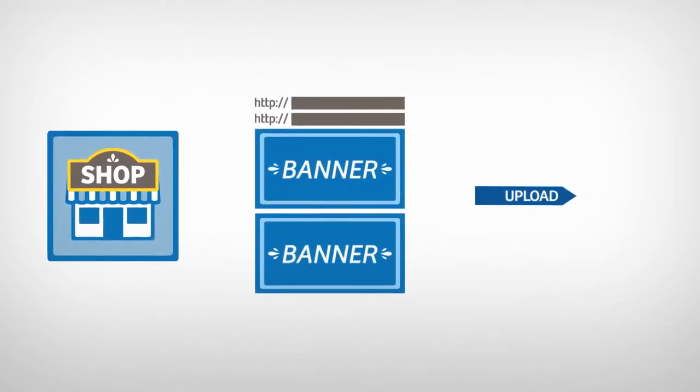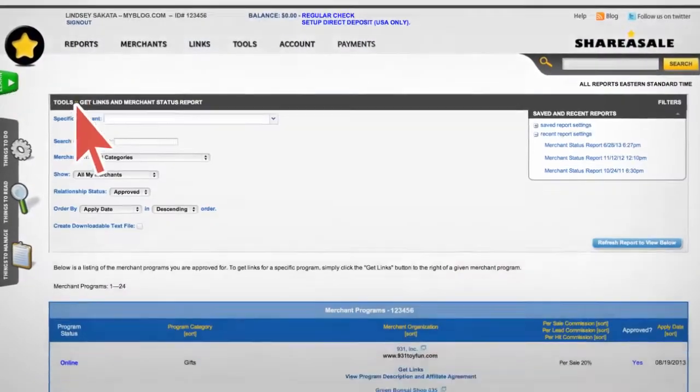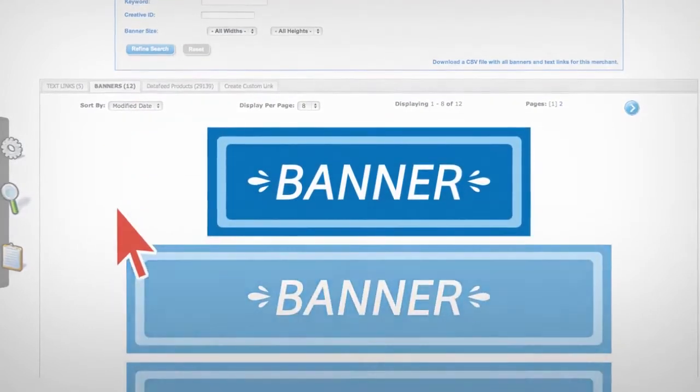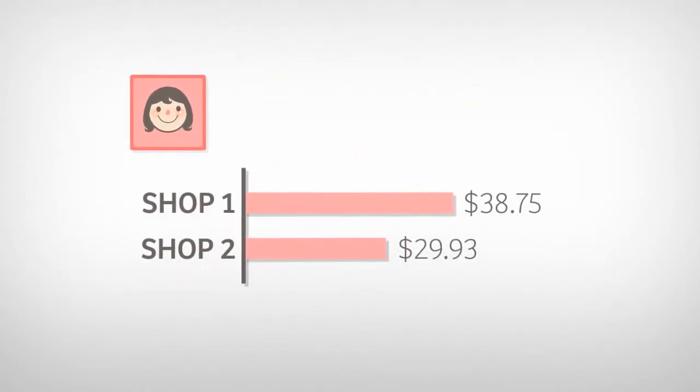Merchants upload product links and banners to their ShareASale account and offer a bounty for sales referred. Affiliates add a link or banner to a merchant's product or website on their pages. ShareASale tracks when users click and buy through the retailer's site and shows your earnings in real time.